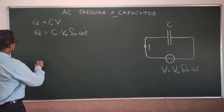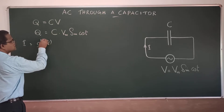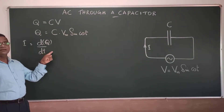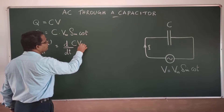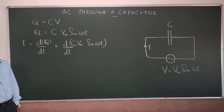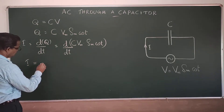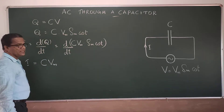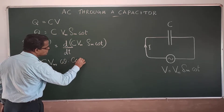Therefore, instantaneous current I is equal to d/dt of the instantaneous charge Q. That is, the rate of flow of electric charges is taken as the current. So differentiating Q = C·Vm sin ωt, we get I = C·Vm · d/dt(sin ωt). The derivative d/dt of sin ωt is ω·cos ωt.